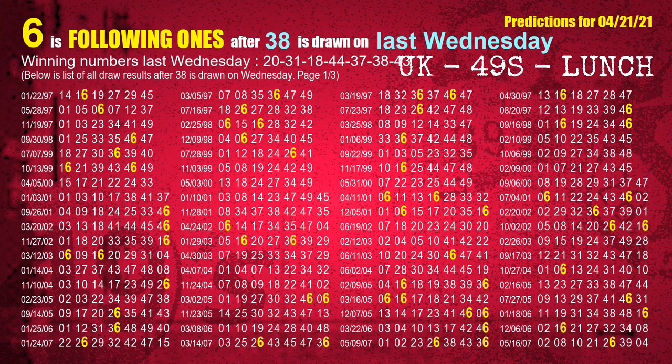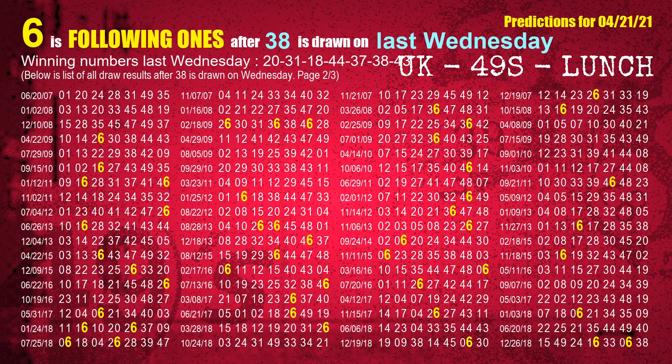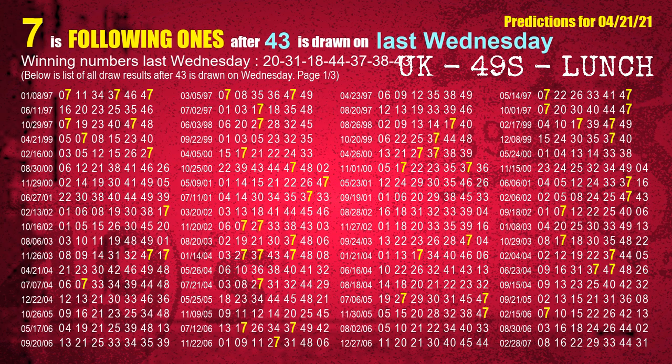The sixth winning number last Wednesday is 38. The most frequently following units digit is 6 when 38 is the winning number on last Wednesday. The booster winning number last Wednesday is 43. The most frequently following units digit is 7 when 43 is the winning number on last Wednesday.